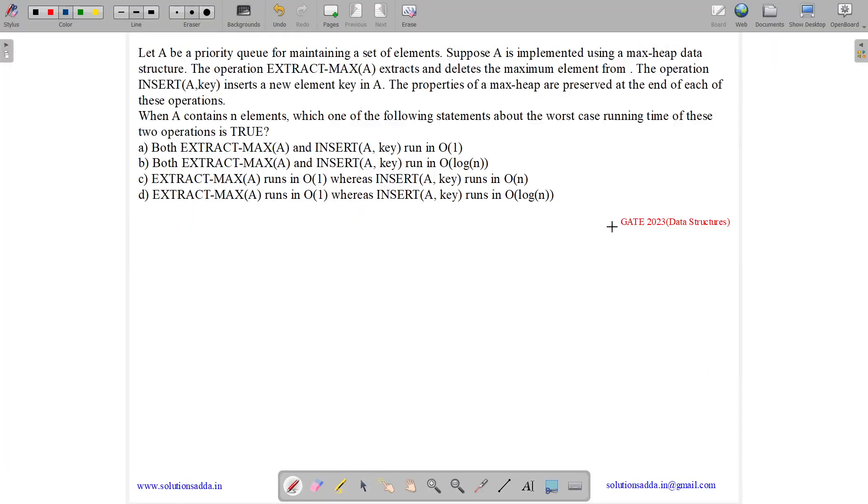This question belongs to data structure subject and was asked in GATE 2023. So the question states, let A be a priority queue for maintaining a set of elements. So what is a priority queue?